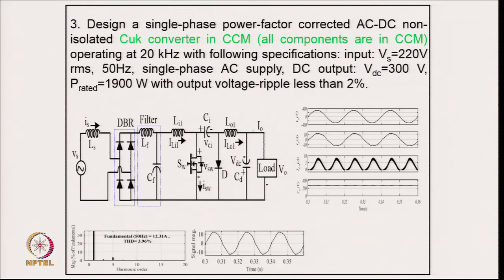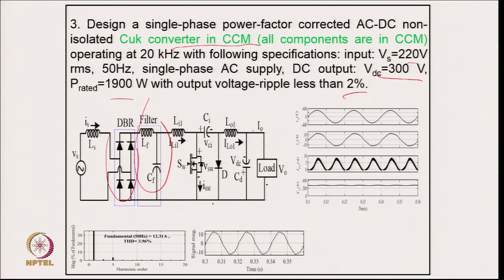The third example: design a single phase power factor corrected AC-DC non-isolated Cuk converter operating in continuous conduction mode at 20 kHz. Specifications: 220 V, 50 Hz single phase AC supply, DC output 300 V, power 1900 W, output ripple 2 percent. The circuit includes a diode rectifier, an EMI filter, and a Cuk converter in CCM using the current multiplier approach — the output voltage regulator generates the reference from the diode rectifier output, and the current is shaped by controlling the MOSFET.